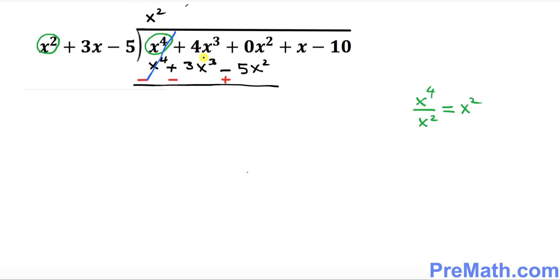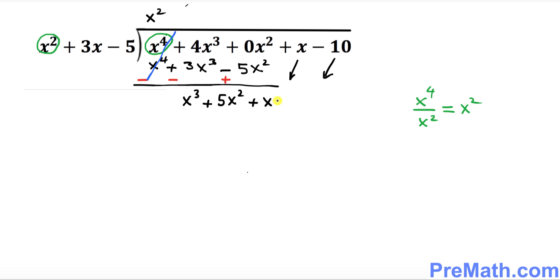So what we end up with: 4x³ minus 3x³ is going to be x³, and this is going to become simply 5x² with a plus sign. Now bring x and −10 right down over here: plus x minus 10.